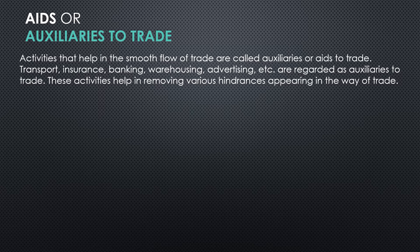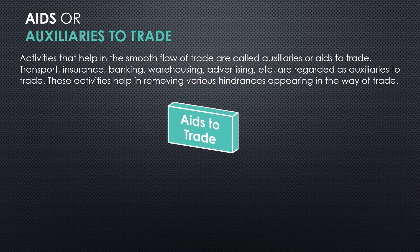These activities help in removing various hindrances appearing in the way of trade. All these activities — transport, insurance, banking, warehousing, advertising — their purpose is to smoothen and simplify the process of trade. Together they constitute the service industry or tertiary industries. All these services help in removing different kinds of hindrances and barriers in the process of trade. We will cover these hindrances in detail later in this chapter.